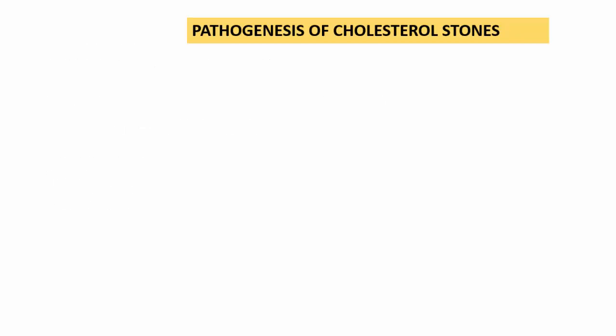Now we know that there are two major types of gallstones: one is the cholesterol type of gallstone, and another is the pigment type of gallstone. We will now understand the pathogenesis of the cholesterol type of gallstone. To understand that, let us first look at what exactly happens under normal circumstances.